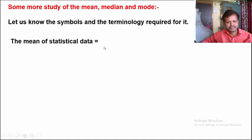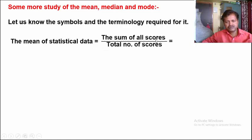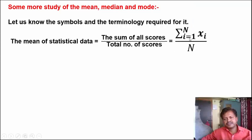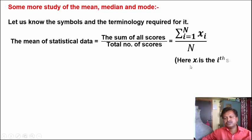The mean of statistical data is equal to the sum of all scores divided by the total number of scores. Generally, for calculating the mean, the sum of all scores (Sarva Praptankanchi Berij) divided by the total number of scores (data chi sankhya) gives us Sigma Xi, where i goes from 1 to n, divided by n. Here, Xi is the i-th score.